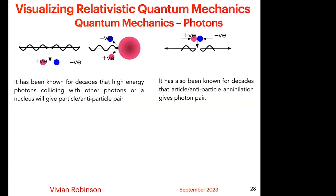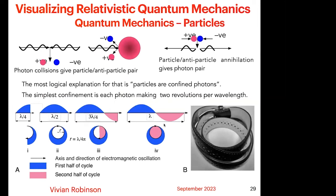To summarize: photons are oscillating electromagnetic fields each perpendicular to the other. They always travel at the local speed of light in the third dimension. They have mass, frequency, and wavelength. The higher their frequency, the greater the mass, the shorter the wavelength. They can be plane polarized or circularly polarized. Circularly polarized photons have a twist angular momentum of h-bar as they travel through space, and that has been measured. The most logical explanation I suggest is that each particle is a confined photon — the simplest confinement being each photon making two revolutions per wavelength.